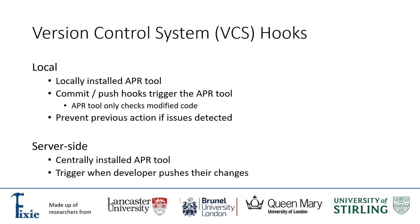By using server side hooks, the tool only needs to exist on the machine hosting the central copy of the repository. The tool can then be triggered when incoming commits are received. A drawback to this design is that it allows for potential faulty code to be sent to the central repository, as well as introducing additional workload for the central repository, which could create a bottleneck.